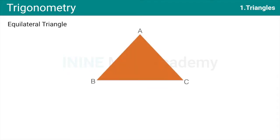You must be knowing Equilateral Triangle is a triangle where all sides are equal. And of course, all angles are also equal. Here, Angle A is equal to Angle B equal to Angle C and all of these angles are equal to 60 degree.